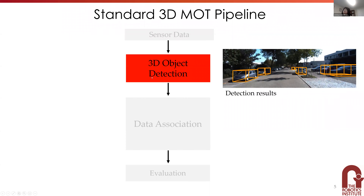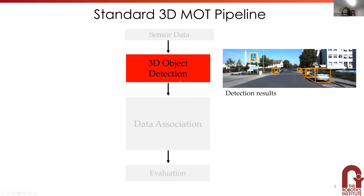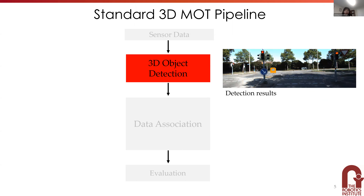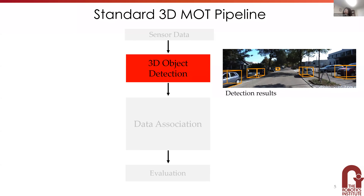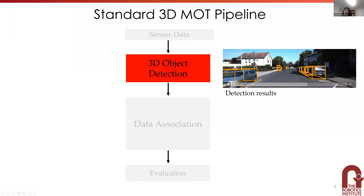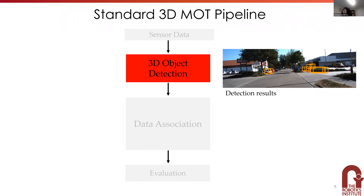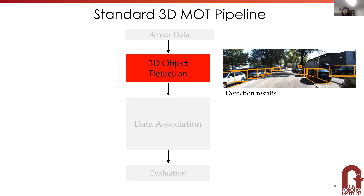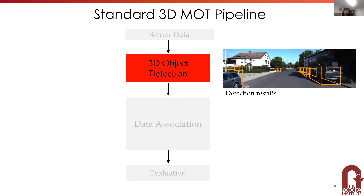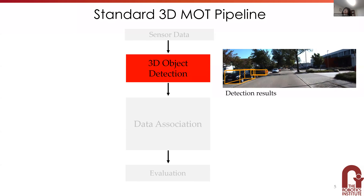Next we have the 3D object detection module, which is really an area many people are working on. In the last two or three years, there have been tons of papers at every computer vision conference. The idea is to get a list of 3D bounding boxes representing the distance, size — length, width, and height — orientation, and XY coordinates of objects. Estimating depth and size becomes really challenging for objects beyond 50 meters.